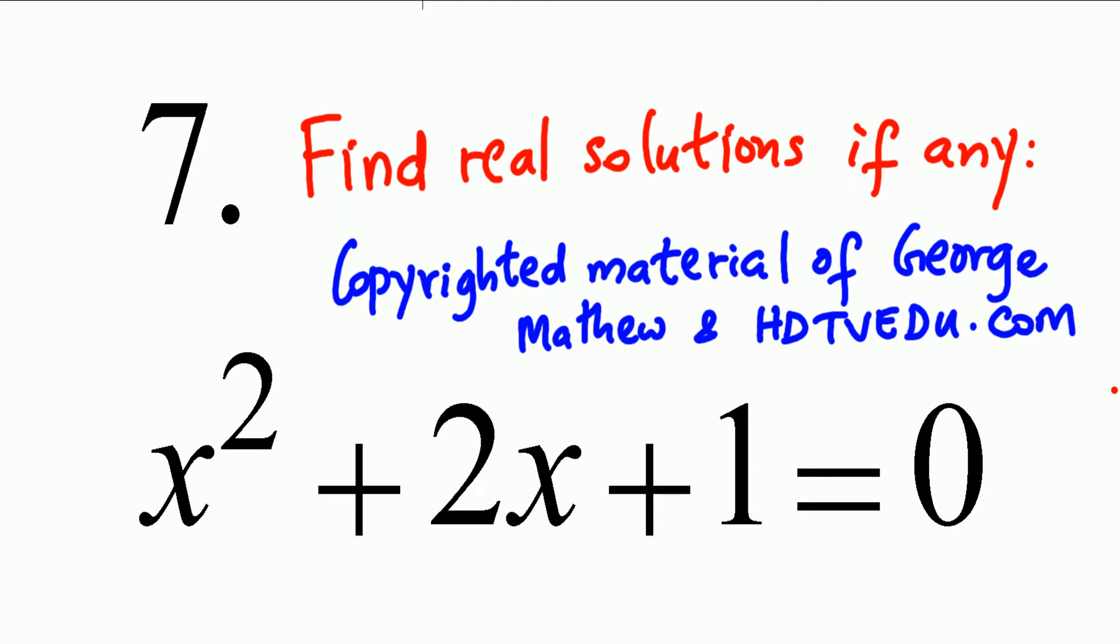Find real solutions, if any, for x squared plus 2x plus 1 equals 0. x² + 2x + 1 = 0.